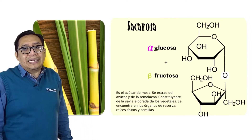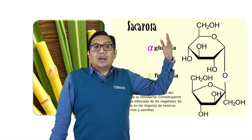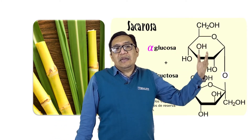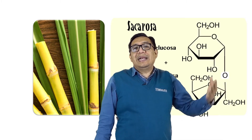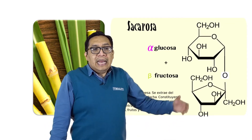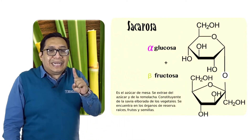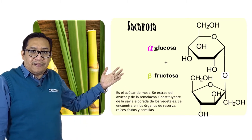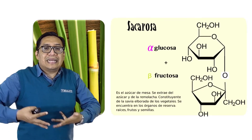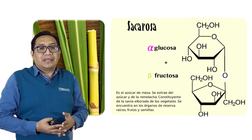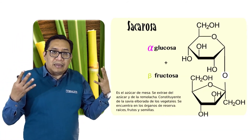Veamos ahora a la sacarosa o azúcar de caña o azúcar de mesa. La sacarosa se encuentra formada por una glucosa y una fructosa mediante un enlace 1-2; 1 la glucosa y 2 la fructosa, es un enlace alfa 1-2. Esta unión se llama sacarosa o azúcar de caña, azúcar de mesa, y es un disacárido que se encuentra en los vegetales. Sobre todo, es el principal azúcar que encontramos en la savia de las plantas. Así como nosotros tenemos en nuestra sangre glucosa circulando, las plantas tienen en su savia sacarosa circulando, dirigiéndose a diferentes tejidos para aportar energía. La sacarosa la encontramos en la caña de azúcar, remolacha, entre otros vegetales más.